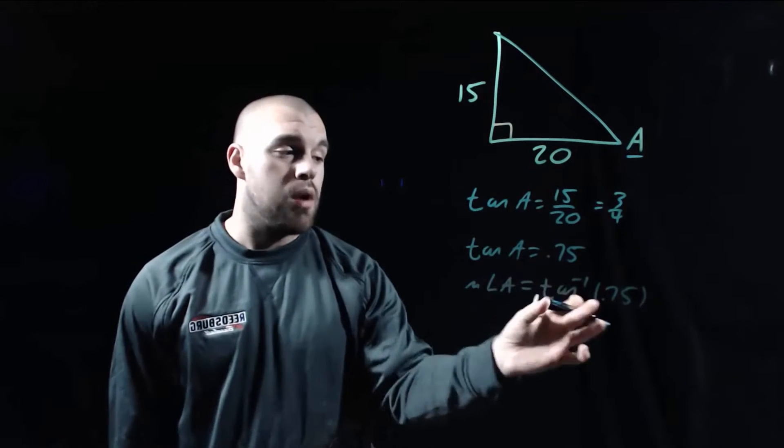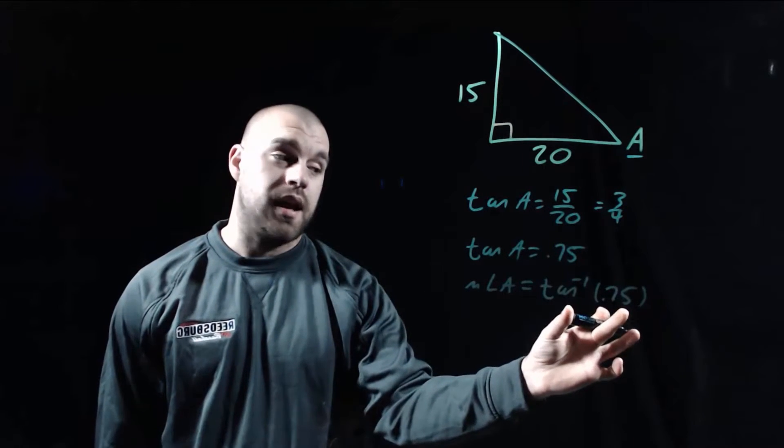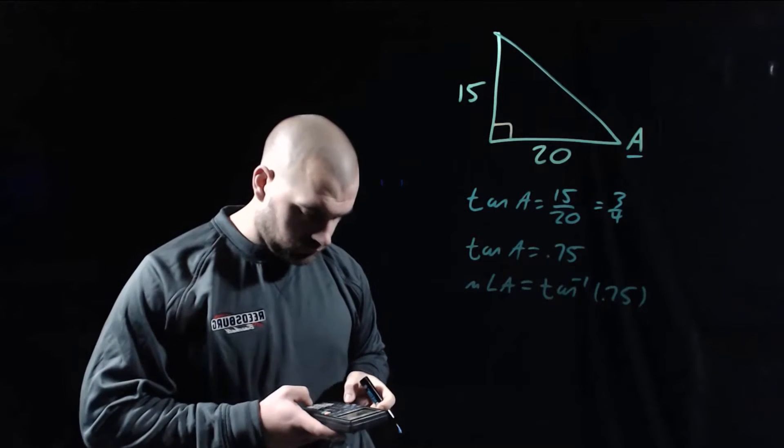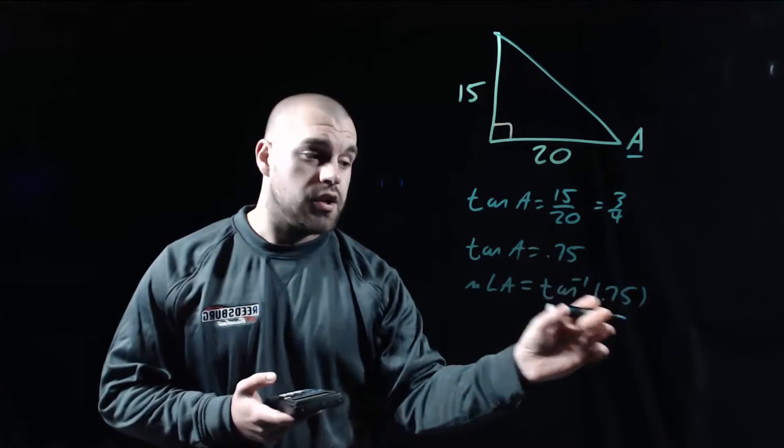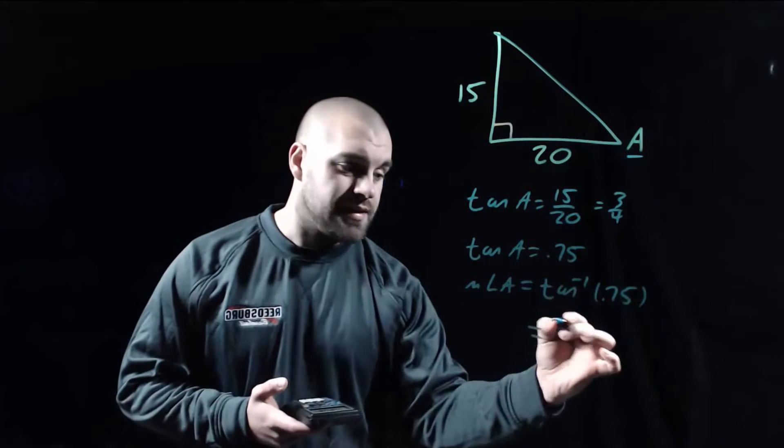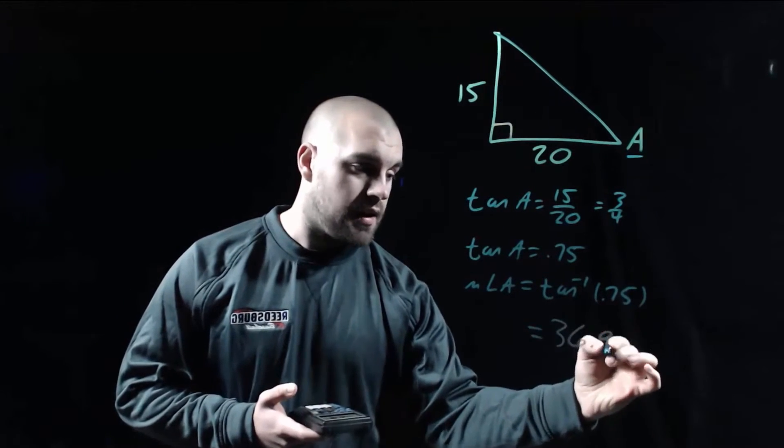And then what we need to do is grab our calculators and type this right-hand part into our calculator. So if I type in the inverse tangent of 0.75, then that tells me that the measure of angle A is about 36.9 degrees.